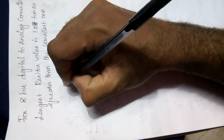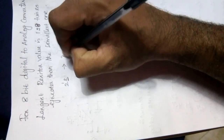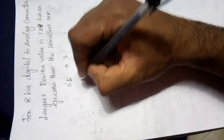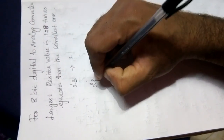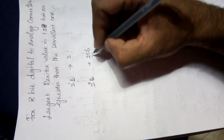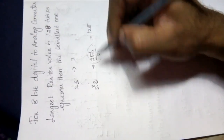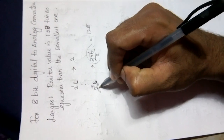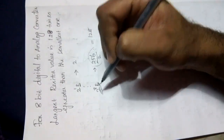The first resistor is 2¹R. Suppose R = 1, so the first resistor value is 2. For an 8-bit DAC, 2⁸ = 256. So 256 divided by 2 gives 128, meaning the last resistor value is 128 times greater than the first resistor value. Therefore, we need a very large range of resistor values, which is the main drawback of the Binary Weighted Resistor DAC.